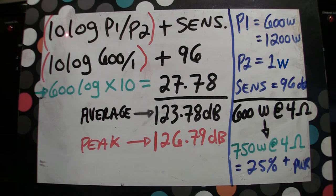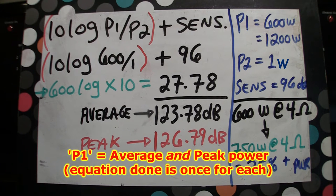In this case you'll see 10 log P1 divided by P2. P1 in this equation is equal to either average power or peak power of a speaker and the speaker is going to be rated.